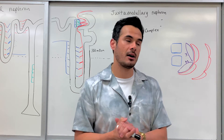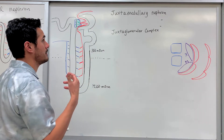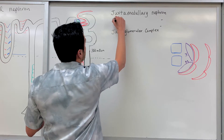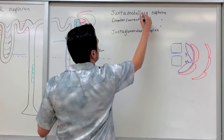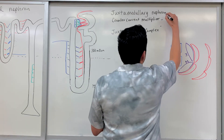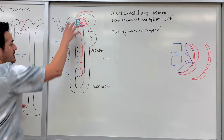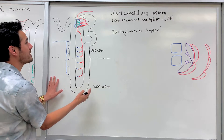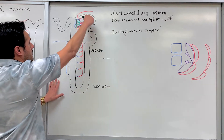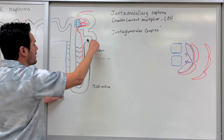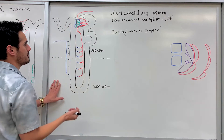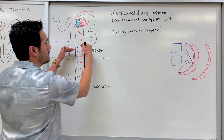Within the juxtamedullary nephron there are a couple of different concepts we need to understand. One is the counter-current multiplier, which is where the loop of Henle, or nephron loop, is. Coming from the glomerular capsule you have the proximal convoluted tubule, then the descending limb, the ascending limb, and then the distal convoluted tubule. This part is the counter-current multiplier.